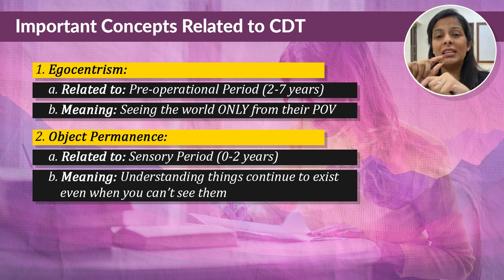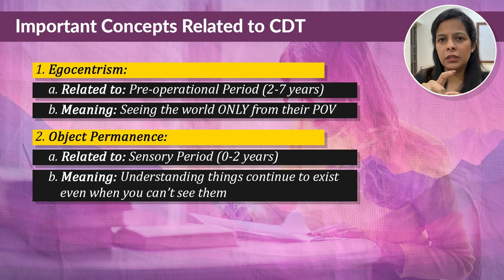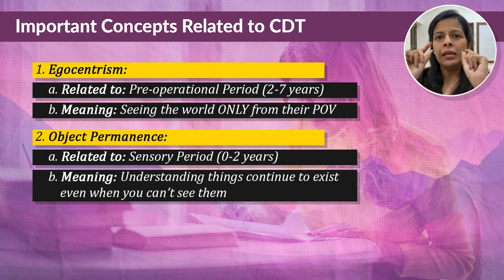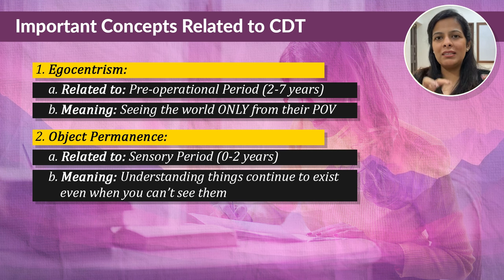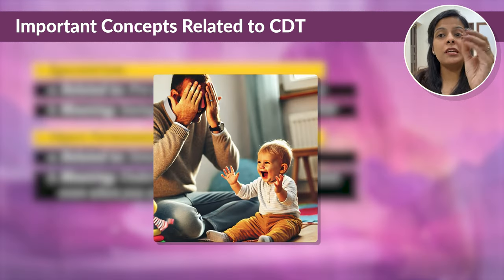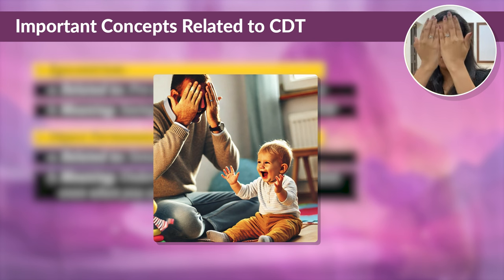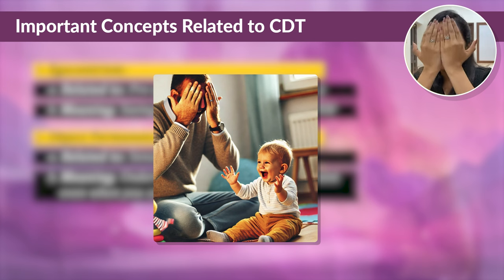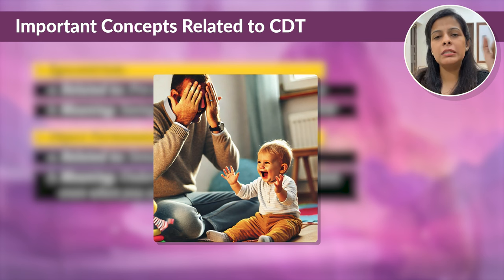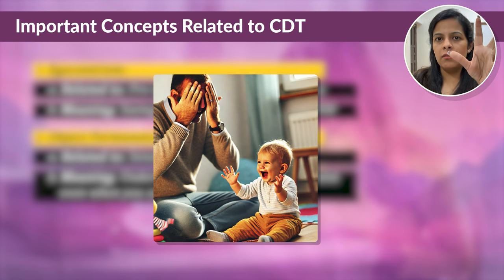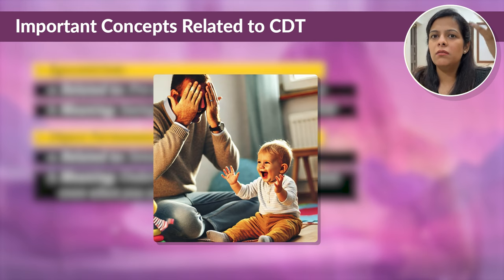The next important term is object permanence. This is a concept that babies develop during the Sensory Motor stage, from birth to around 2 years old. Object permanence is the understanding that things continue to exist even when you can't see them. Before this skill develops, if a baby can't see something, they believe it's gone forever. A classic example is peekaboo — when you hide your face, the baby might think you've completely disappeared. But as they develop object permanence, they start to understand that you are still behind your hands even when they can't see you.